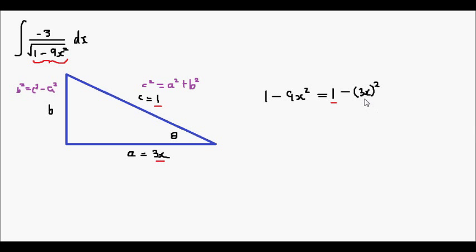The 3x corresponds to this 3x. So knowing that b squared equals c squared minus a squared, then b squared equals 1 minus 3x squared. That's how we've constructed a right-angle triangle from our given expression inside our square root. Now we can proceed and find the correct trig substitution.